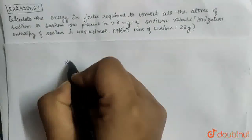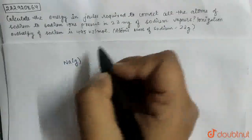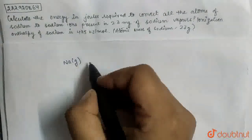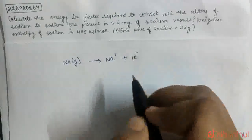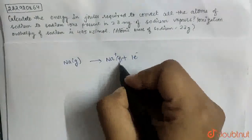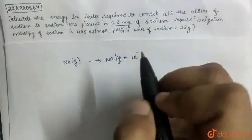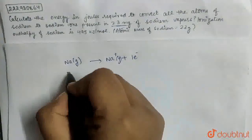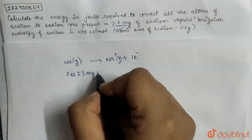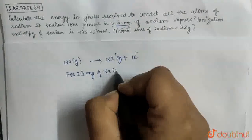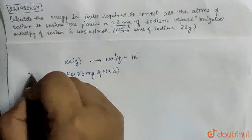Means, we have sodium vapors, okay, sodium vapors to sodium ions. The energy used to calculate energy for 2.3 mg of sodium. What is for? For 2.3 mg of sodium. This is to calculate energy.